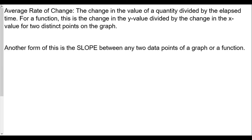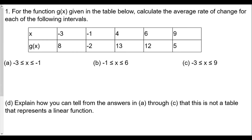For the function g(x) given in the table below, calculate the average rate of change for each of the following intervals. For the first interval, we're finding g(x) when x equals negative 3 and x equals negative 1. From the table, our coordinates will be negative 3 comma 8.